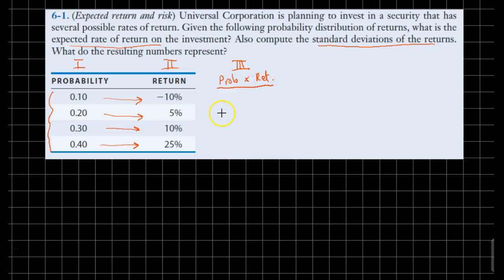So let's start with the first row, the first state of the world. With 10% chance, our return will be minus 10%. We will lose our investment, a portion of our investment. So that would give us 10% of 10% would be 1% loss, minus 1%.